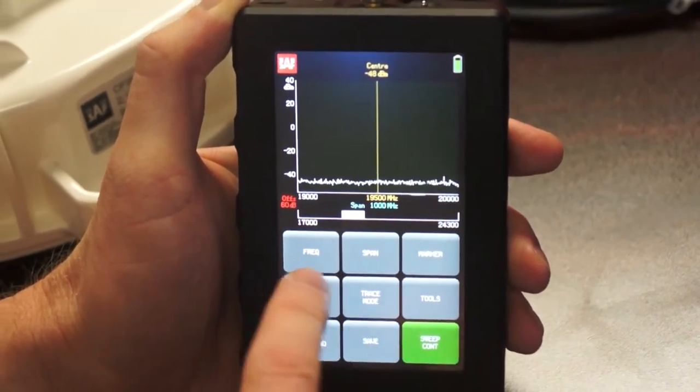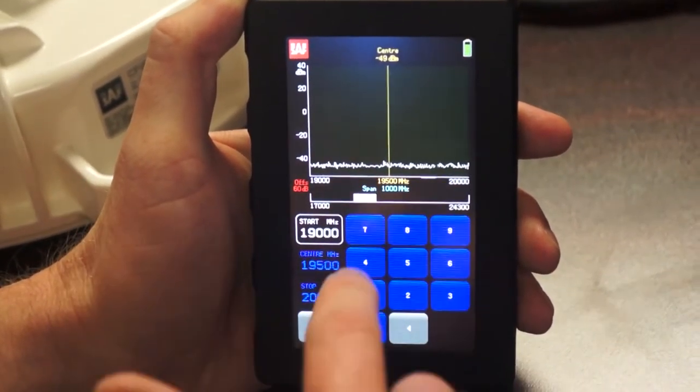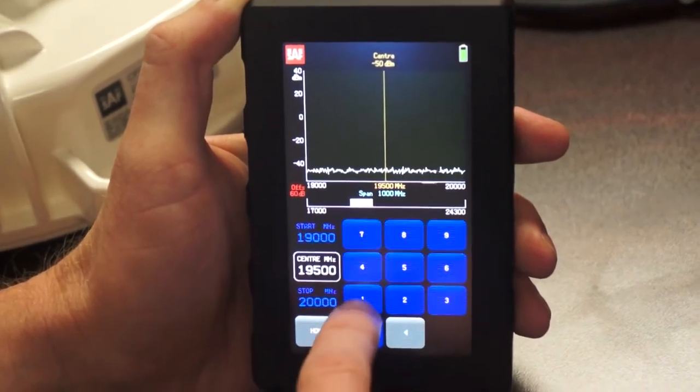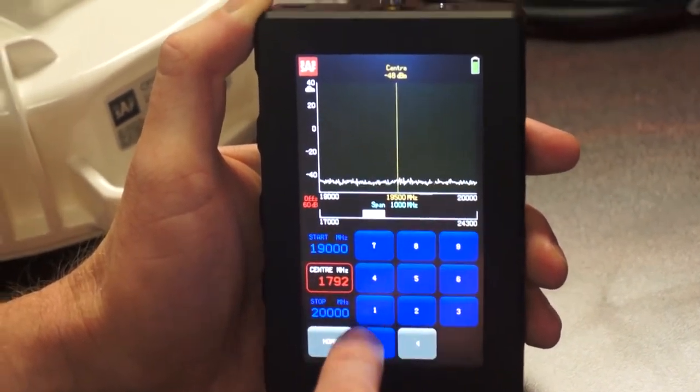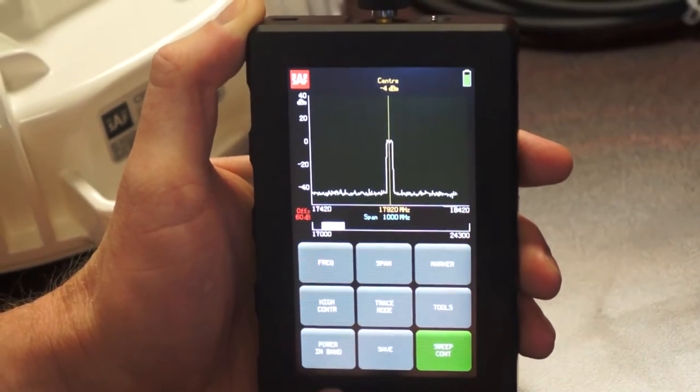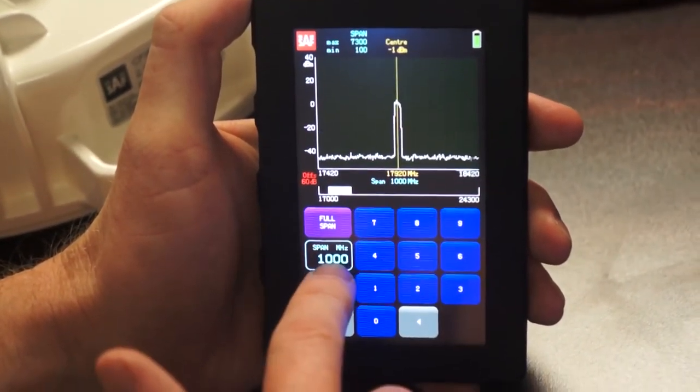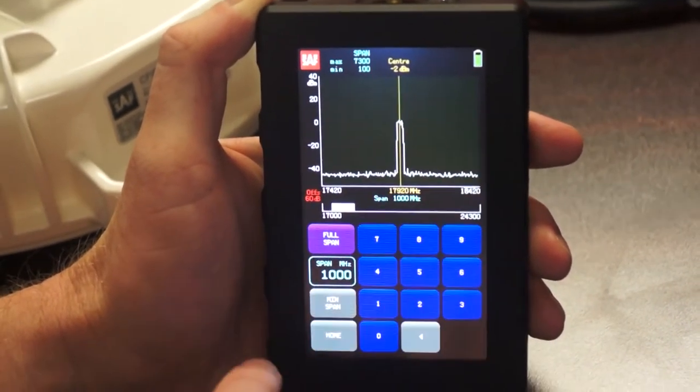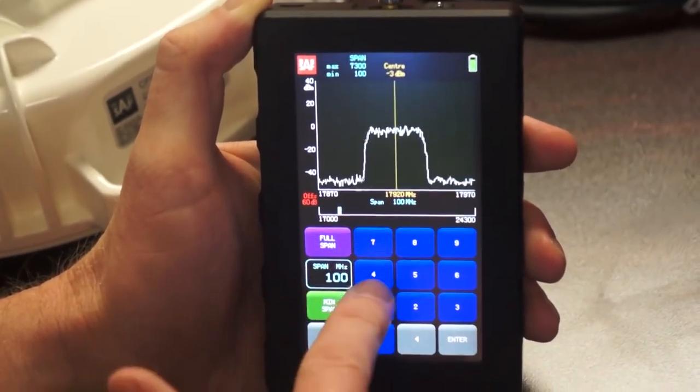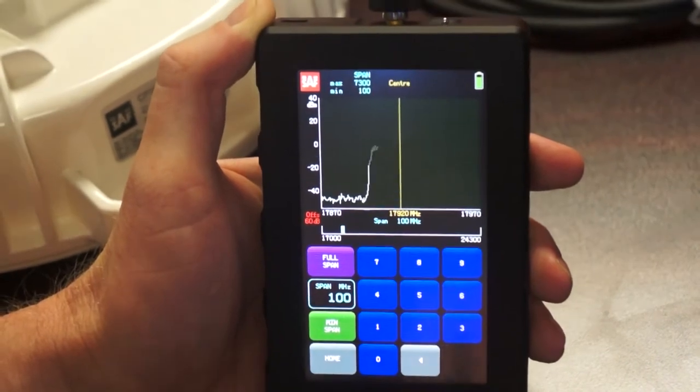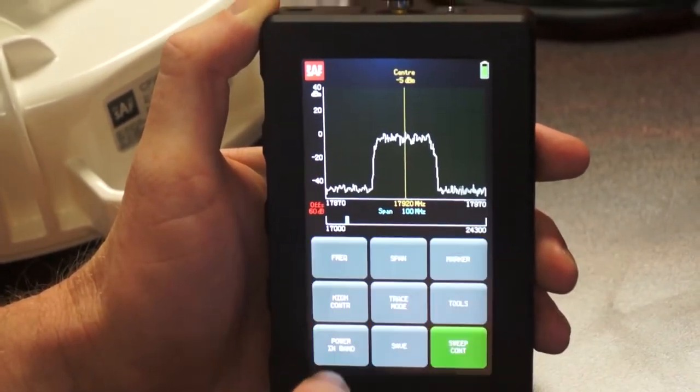The next thing I'll go ahead and do is set the frequency of the transmitter. This radio is transmitting at 17.92 gigahertz. So we'll go ahead and put that in. And the next thing I'll do is adjust the span. Right now it's got a span of 1 gigahertz on the field. But I'll go ahead and set that to a minimum span of 100 megahertz to give me a much clearer picture of the signal.